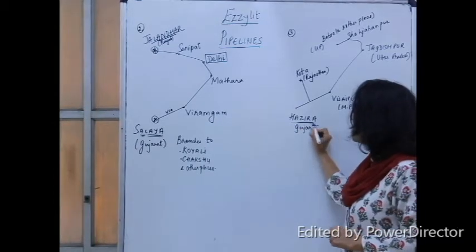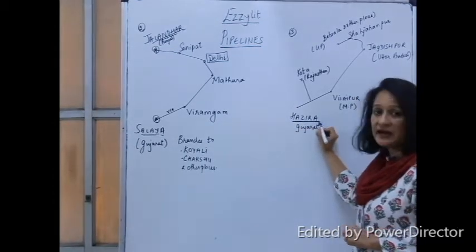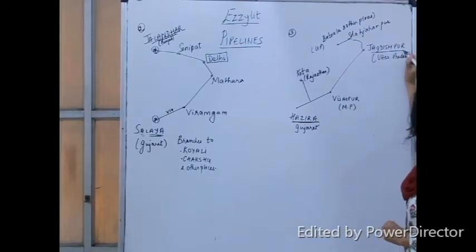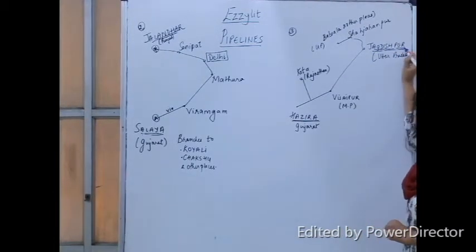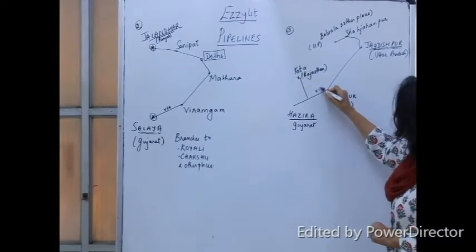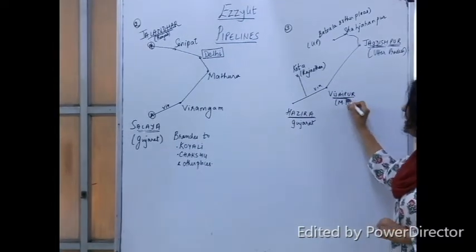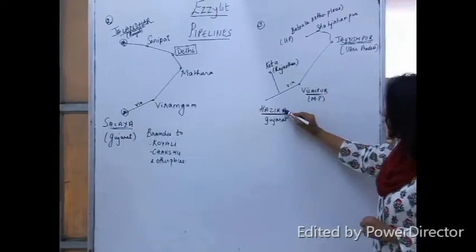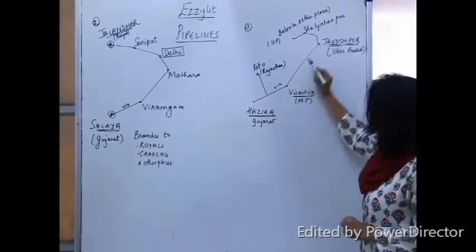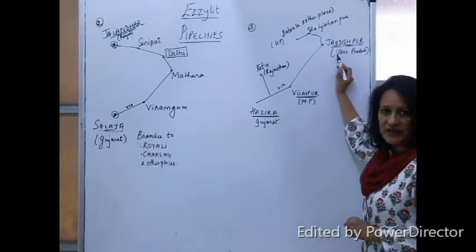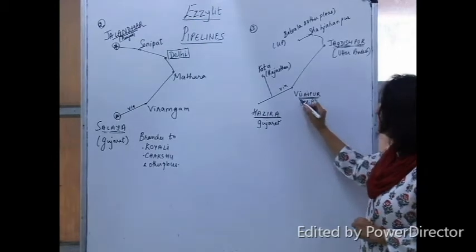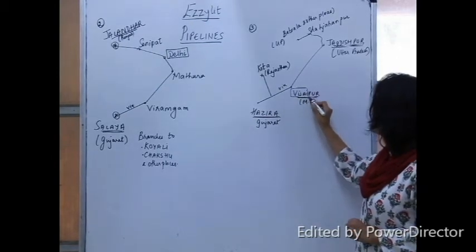Now we come to the third pipeline network, that is from Hazira in Gujarat to Jagdishpur in Uttar Pradesh via Vijaypur in Madhya Pradesh. So these are the three places you remember: Hazira in Gujarat to Jagdishpur in Uttar Pradesh via Vijaypur in Madhya Pradesh.